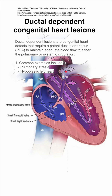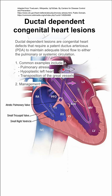Another example is hypoplastic left heart syndrome — kind of the opposite. In hypoplastic left heart, you'd have a smaller left heart, and you'd be relying on the right heart to pump blood through the pulmonary valve into the pulmonary circulation as usual, but also through the patent PDA into the systemic circulation. Another example is transposition of the great vessels, where you essentially have two separate circuits — the right heart and the left heart going into two individual circuits — and they're only connected by that patent PDA.